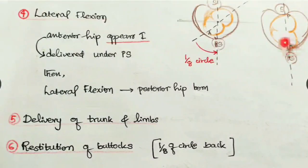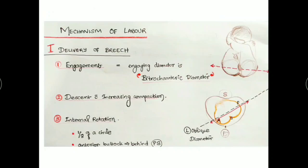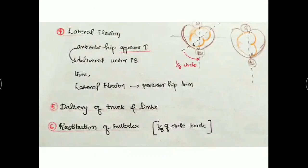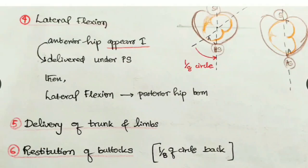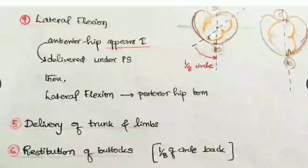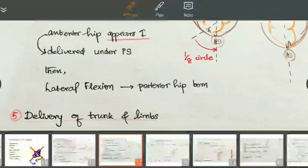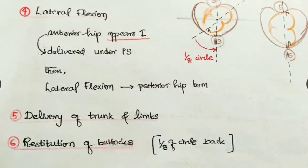The anterior buttock lies just beneath the pubic symphysis - that is internal rotation. Next is lateral flexion: delivery occurs by lateral flexion. The anterior hip appears first and is delivered under the pubic symphysis, then by lateral flexion the posterior hip is also born. Next is delivery of the trunk.